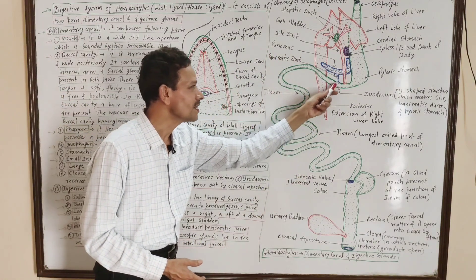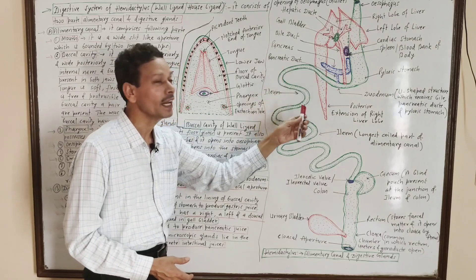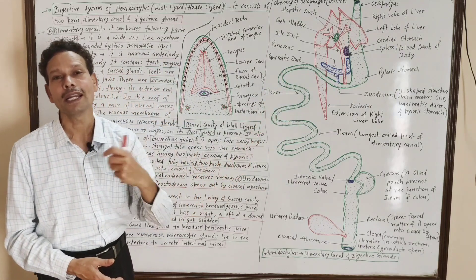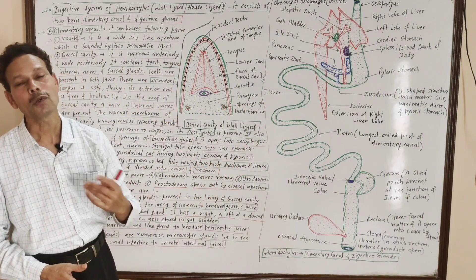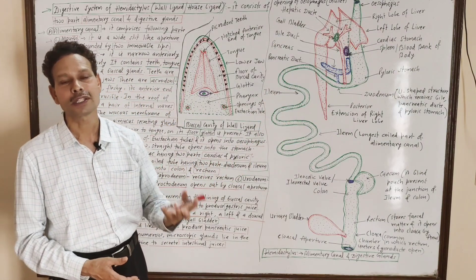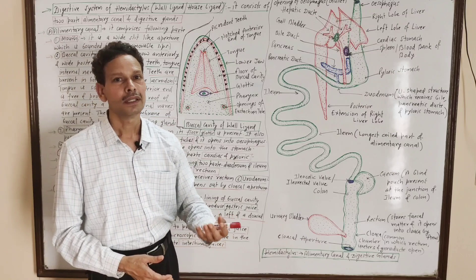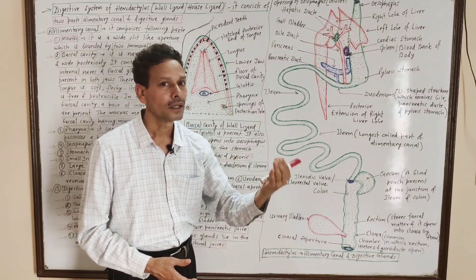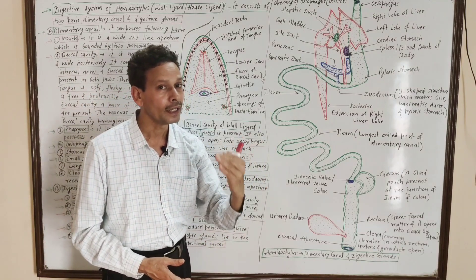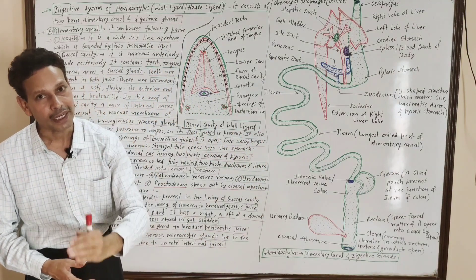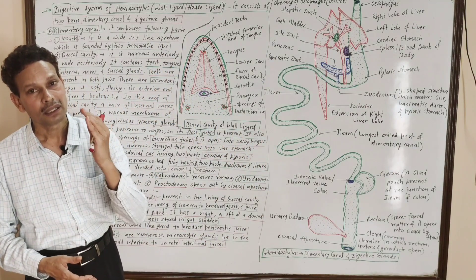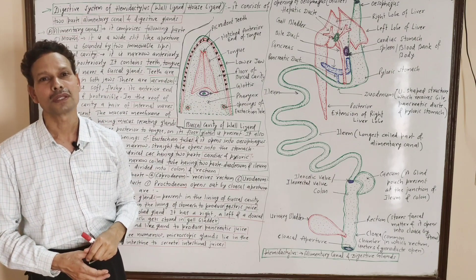In the lining of the small intestine, microscopic tubular structures are present — these are the small intestinal glands — which secrete intestinal juice.